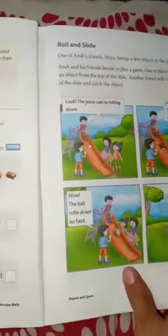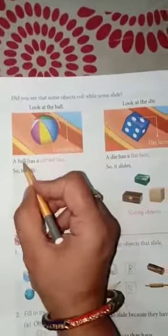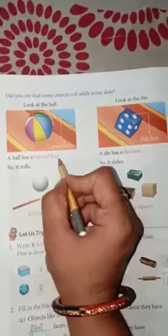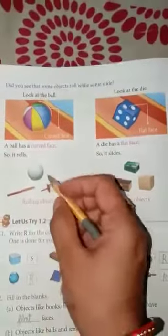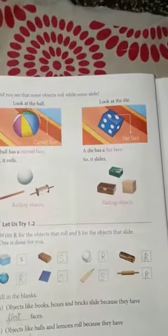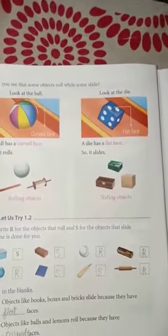Next, humara topic hai roll and slide. Dekhein ki roll kaun si cheezein hoti hain aur slide kaun si. Look at the ball. A ball has a curved face, so it rolls. Yeh jo hai curved face hai, isliye yeh roll karti hai. A die has a flat face. Jo die hai iska face jo hai yeh flat hote hain, so it slides. Yeh dekhiye kuch rolling objects ke example diya hai aur idhar sliding objects ke example diya hai. Jinke flat face hote hain woh slides hote hain, aur jinke curved face hote hain, woh rolls karti hai.